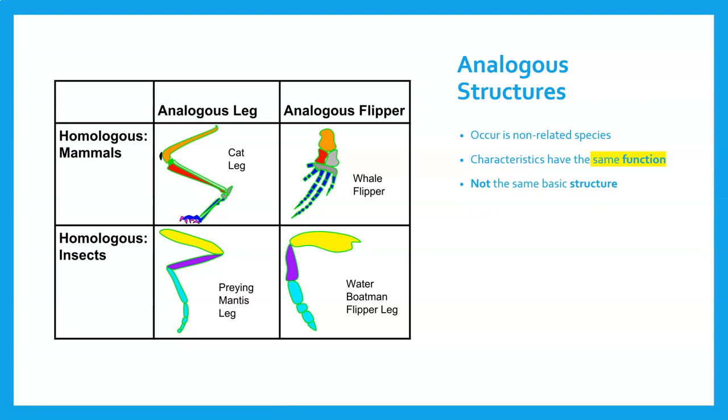You see the bright blue of the base of the praying mantis' leg, whereas the foot and shin bone of the cat are completely different features. Same function because they're both legs, but completely different structures. So analogous means same function, different structure. Homologous means same structure, different function.